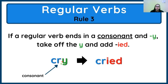Third rule: if a word ends in consonant y, and the letter before it is a consonant as well, we remove y and change it to i, e, d. Again, if a word ends with y, we change it to i, e, d. Good job.